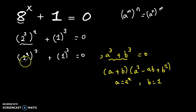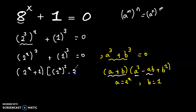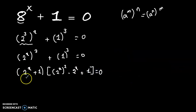So now we can write 2 to the power x cubed plus 1 cubed as: 2 to the power x plus 1, multiplied by 2 to the power x squared minus 2 to the power x plus 1, equal to 0. Now we can say that either 2 to the power x plus 1 equals 0.